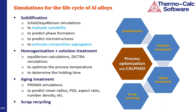TC-Python is now officially complete and can do everything that the standalone calculators and PRISMA do. It enables one to make customized calculations and high-throughput calculations. Today I will focus on the simulations for the life cycle of aluminum alloys, from solidification to solution treatment and to aging treatment, as well as aluminum scrap recycling.